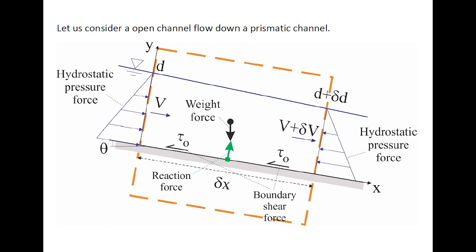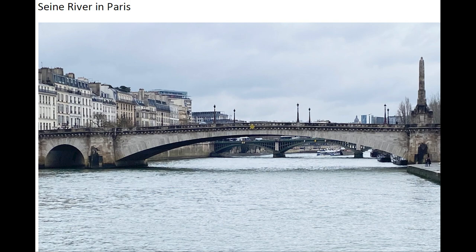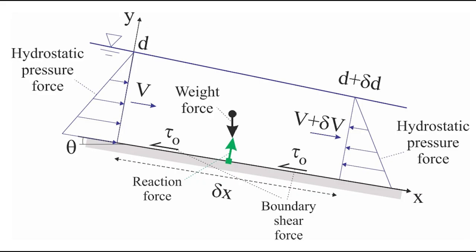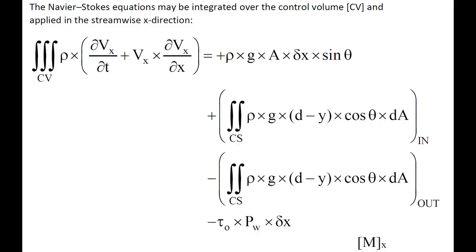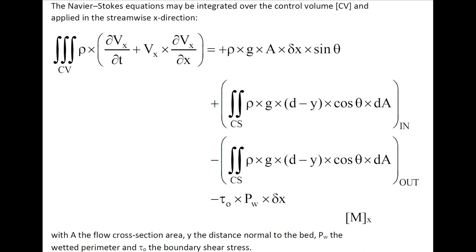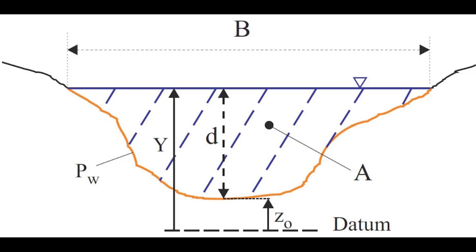Let us consider another application: an open-channel flow down a prismatic channel. This could correspond to a river such as the Seine River in Paris. The force applied to the control volume equals the gravity force acting downwards, a hydrostatic pressure force acting on the upstream and downstream control surfaces, the boundary shear force acting along the wetted surface resisting the flow motion, and a reaction force acting perpendicular to the channel bed. The Navier-Stokes equations may be integrated over the control volume in the stream-wise x-direction, with A the flow cross-section area, y the distance normal to the bed, and P_w the wetted perimeter with tau_0 the boundary shear stress.